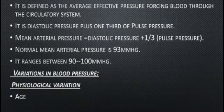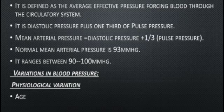The ideal value of mean arterial pressure is 93 mmHg, which is perfectly normal. The normal range for mean arterial pressure is between 90 to 100 mmHg.